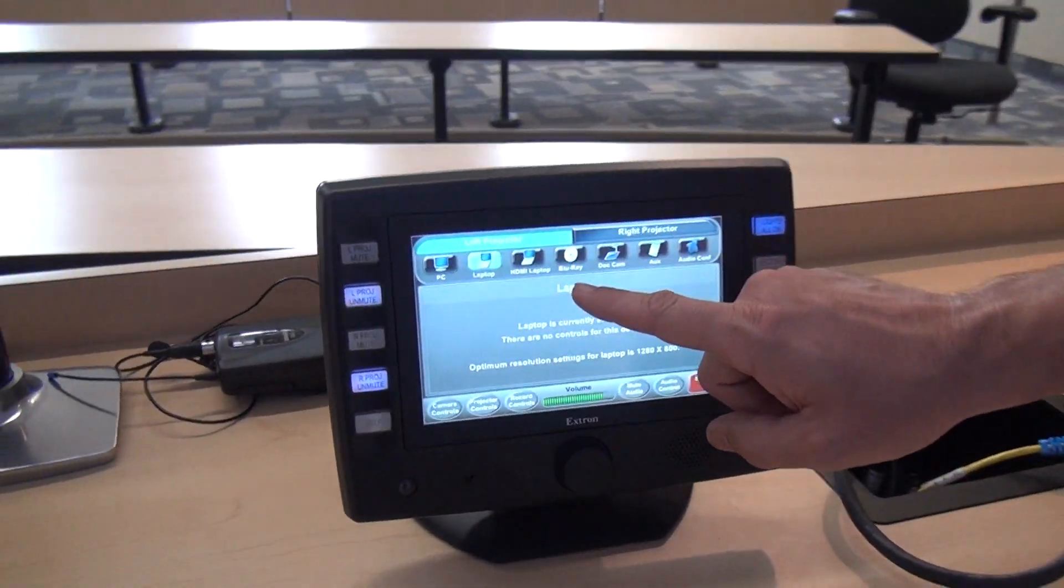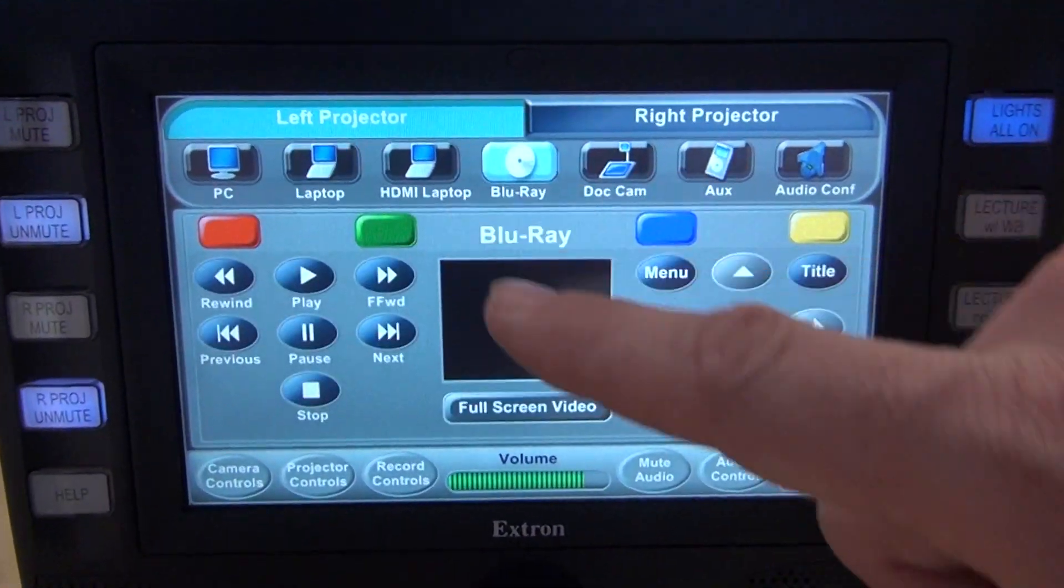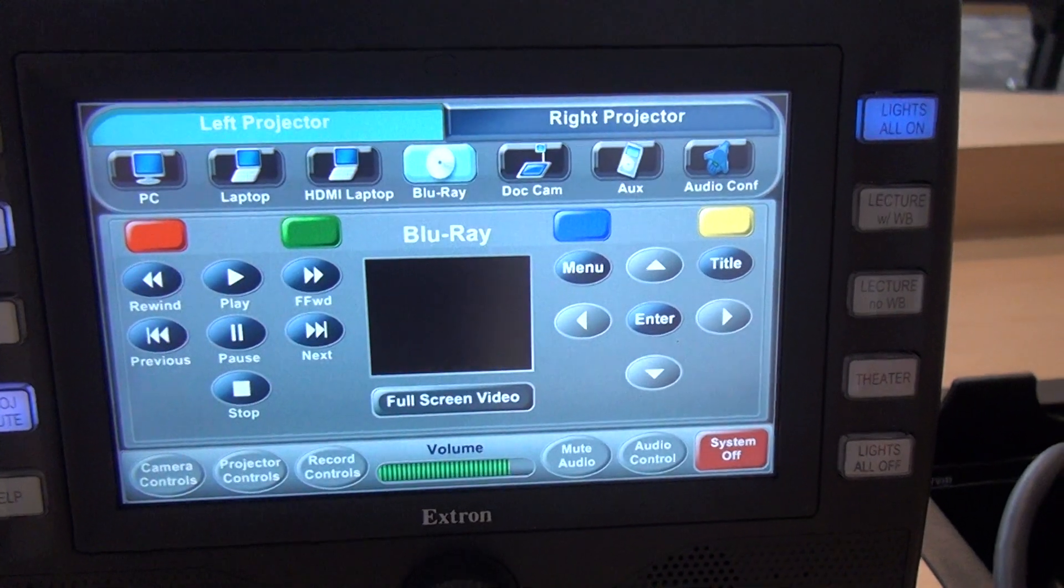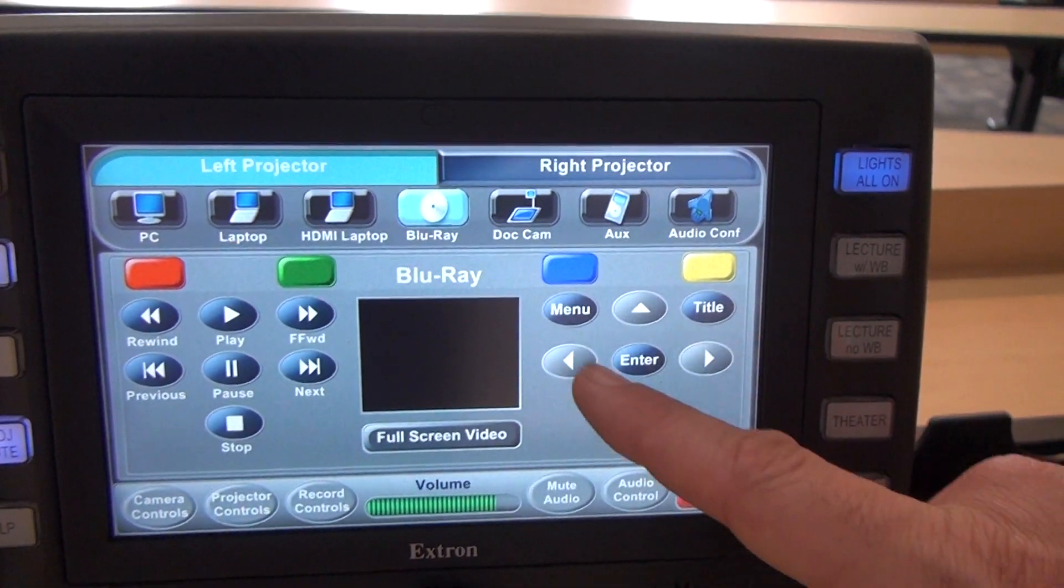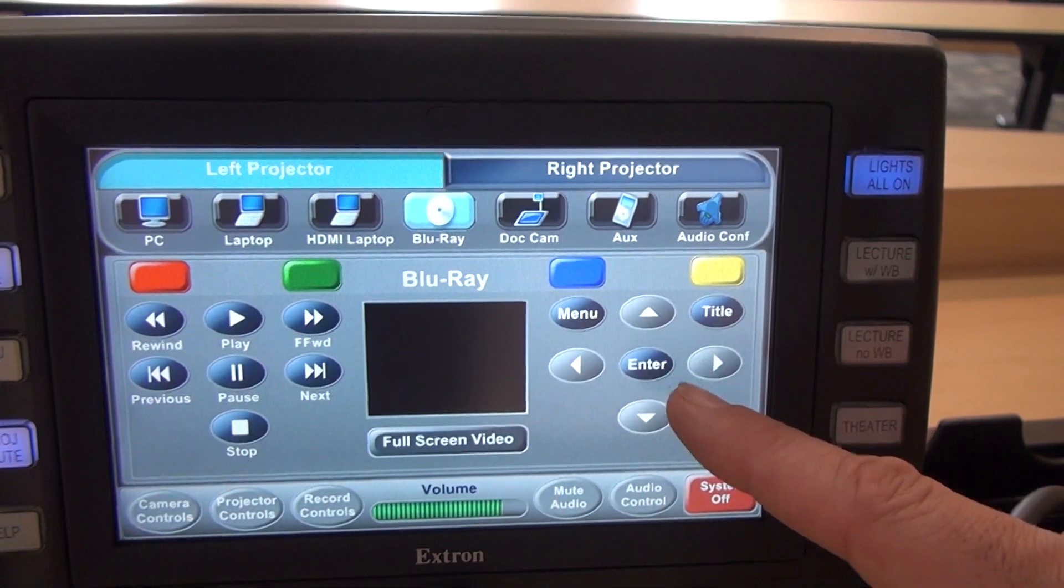The next button in our source select row is our blu-ray button. When I press the blu-ray button it brings up the controls for the blu-ray. On the left-hand side there we have our play and our stop. On the right-hand side we have our navigation controls and our menu buttons.